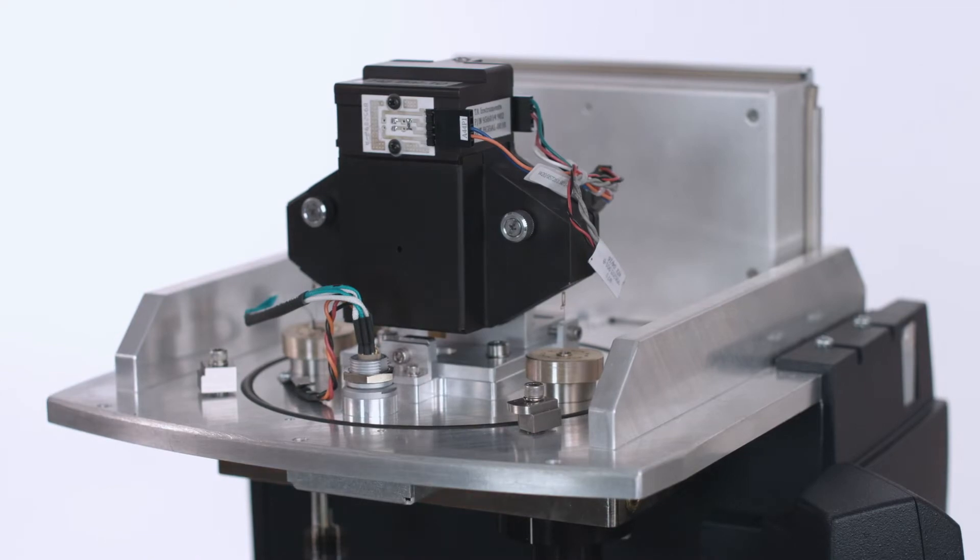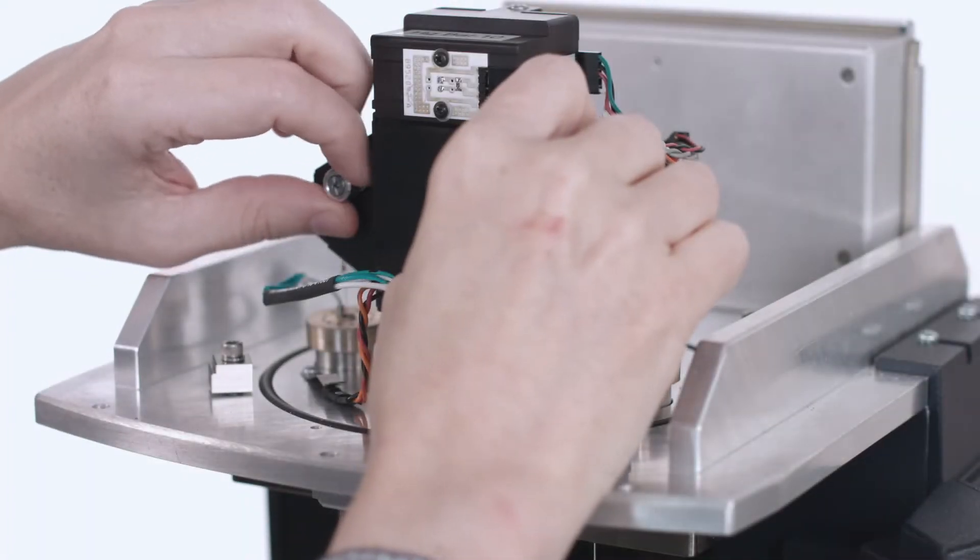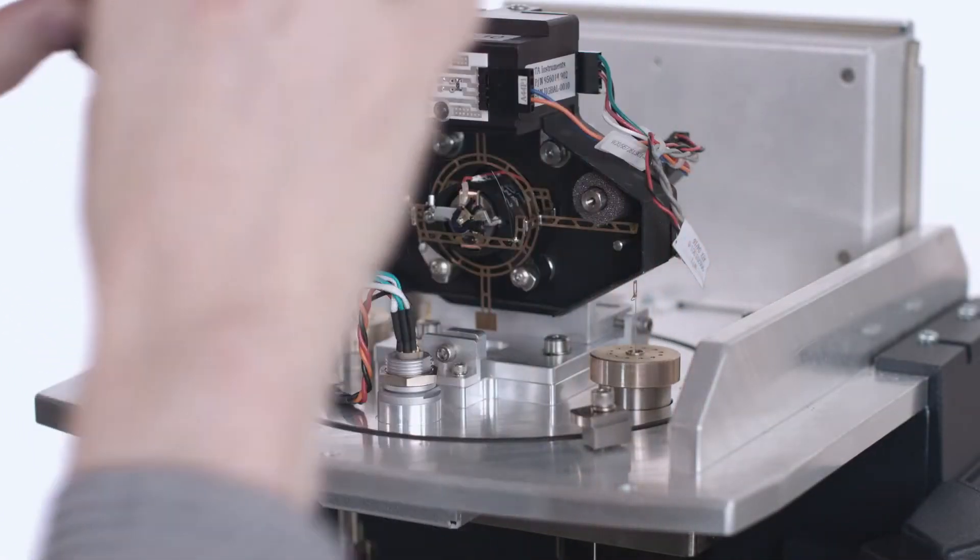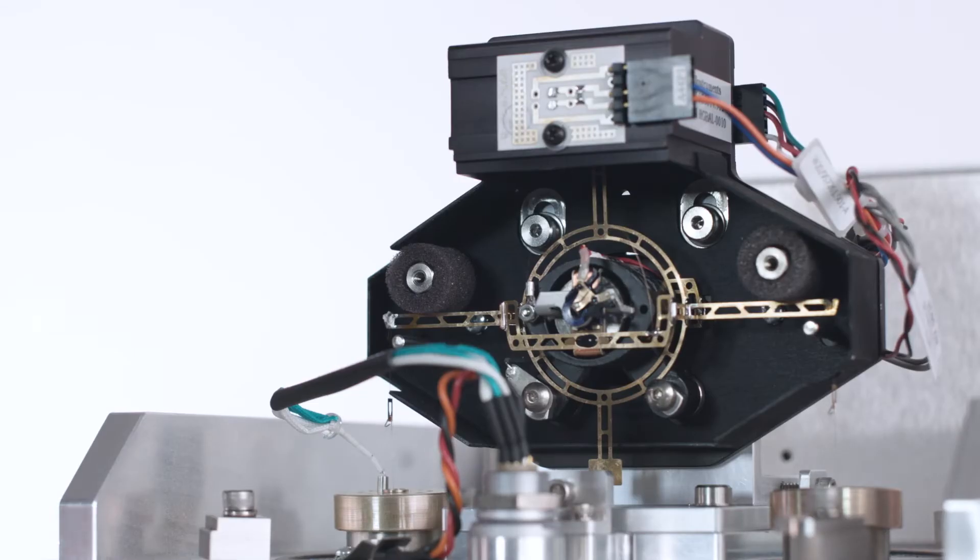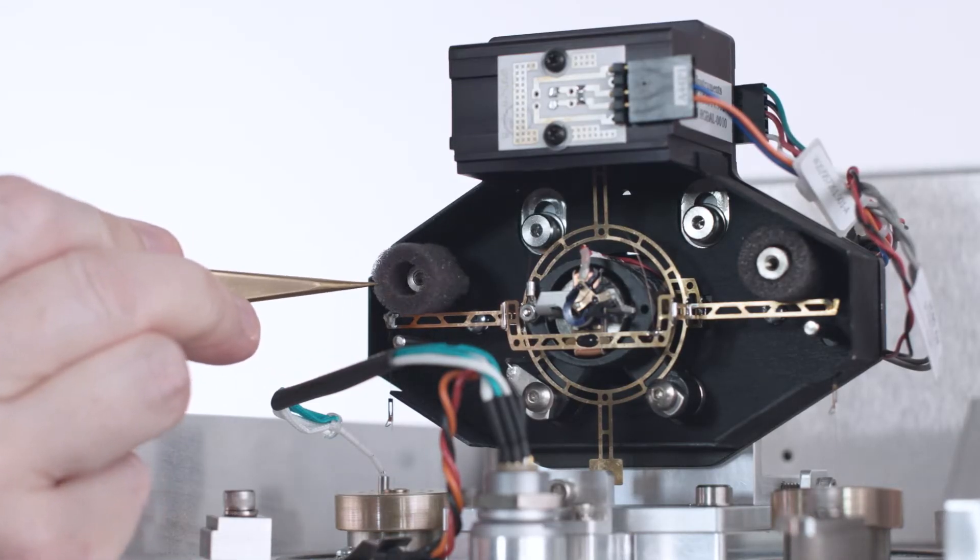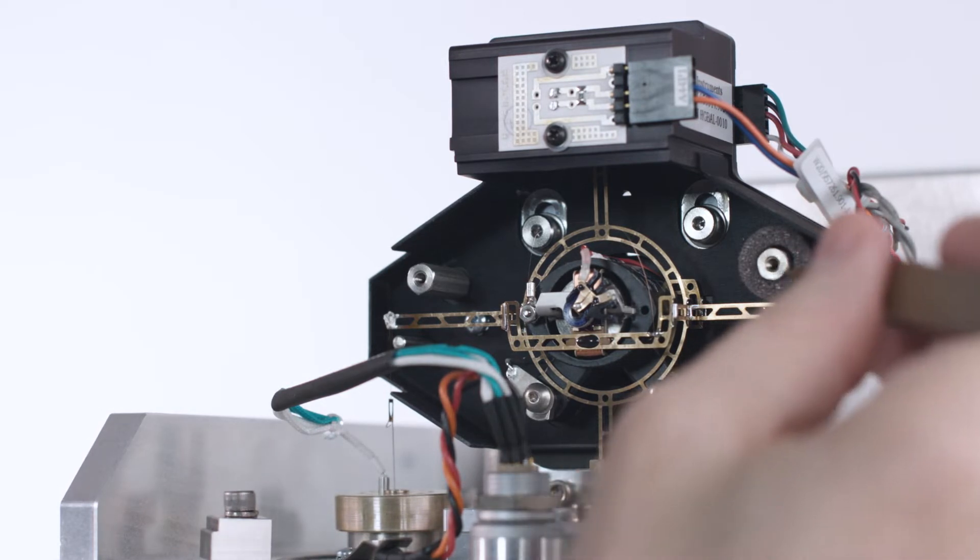Remove the balance housing by lifting straight up and loosen the two captive thumb screws and remove the balance cover plate. If necessary, remove the foam pieces within the balance.